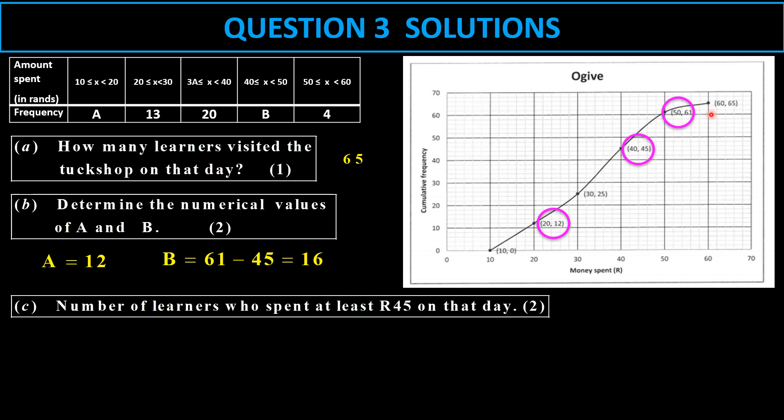The number of learners who spent at least 45 Rand. So there's 45. I take the reading and I get the reading there in the 50s. And they have to subtract it from 65. So it's 54 subtracted from 65. That gives you 11.